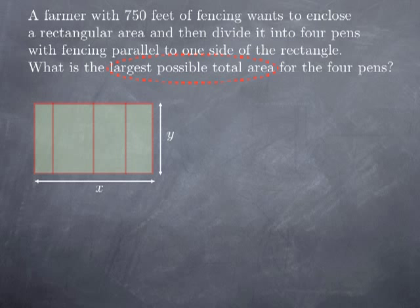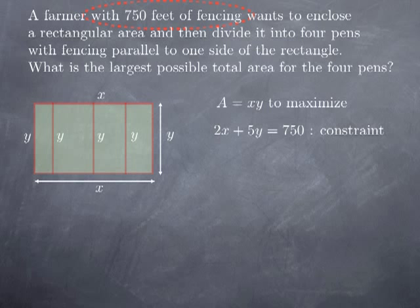We are enclosing a rectangular area and dividing it into four pens using fencing parallel to one side. So we want to maximize A = xy, the product of the outside dimensions. The constraint is that I have only 750 feet of fencing. I need fencing on every single segment — that requires 5y (for the five parallel segments in the y direction) and 2x. So 5y plus 2x must be 750.